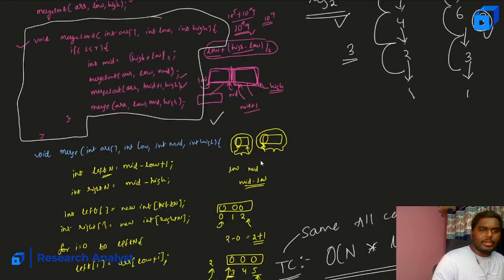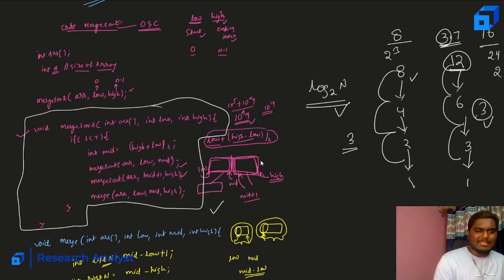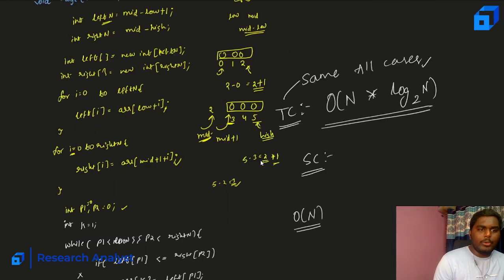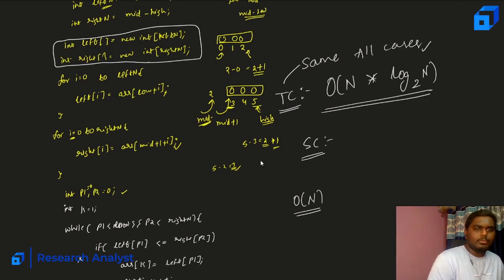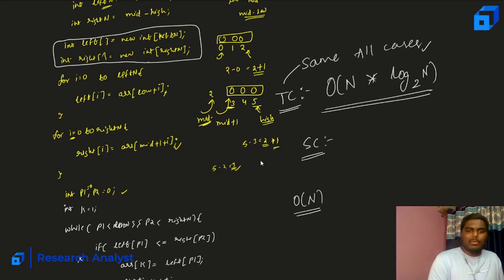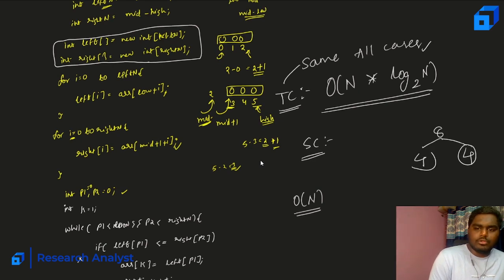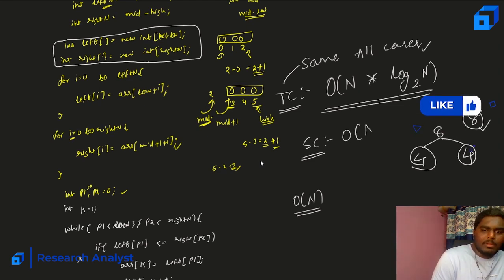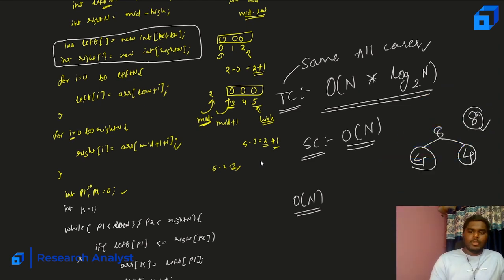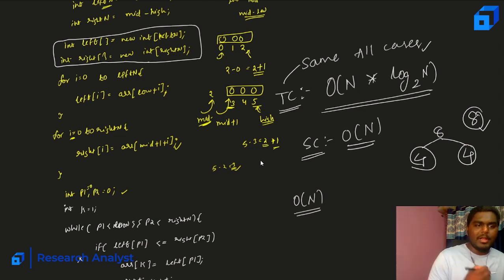For space complexity: we are not using extra space beyond the stack, but we do create two temporary arrays during merging. At most, for an 8-element array divided into halves of 4 and 4, we use 8 elements total — so the space complexity is O(n). That is the analysis of merge sort.